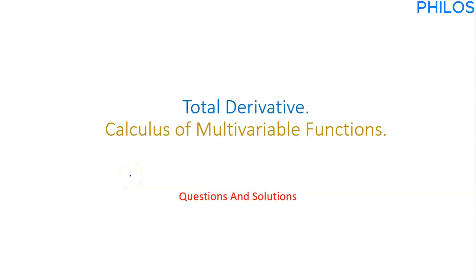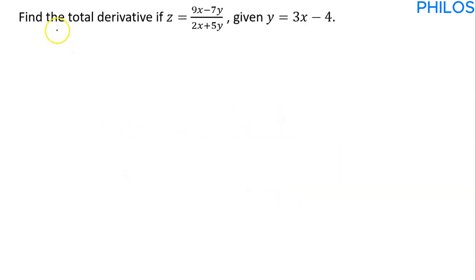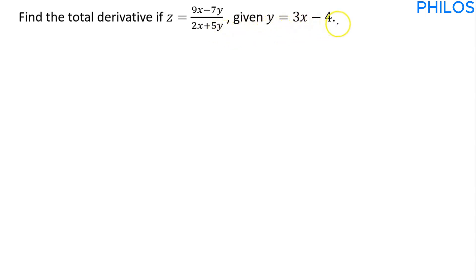Let's take a question on total derivative and see how to solve it. The question says: find the total derivative if z is equal to (9x minus 7y) divided by (2x plus 5y), given y is equal to 3x minus 4.